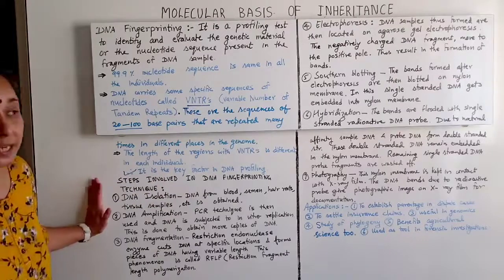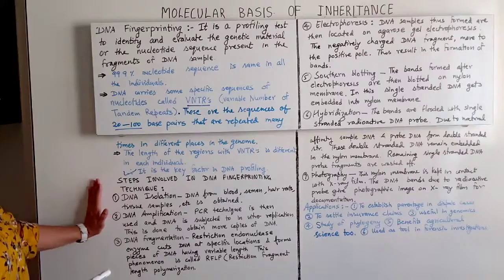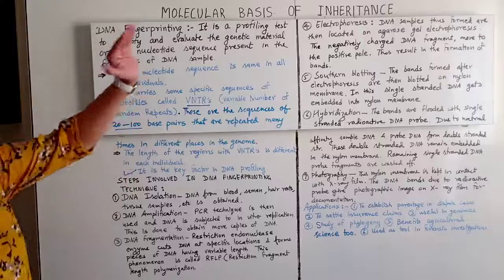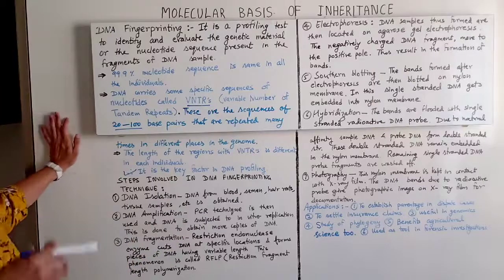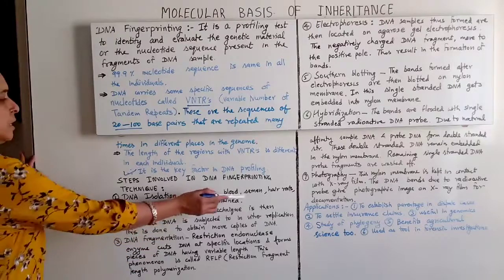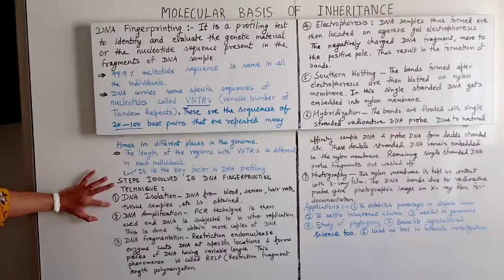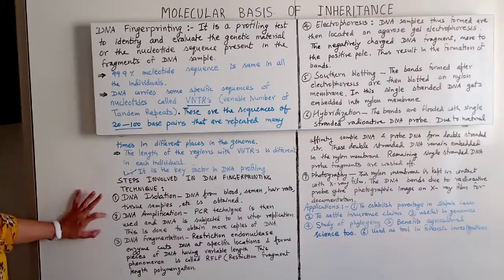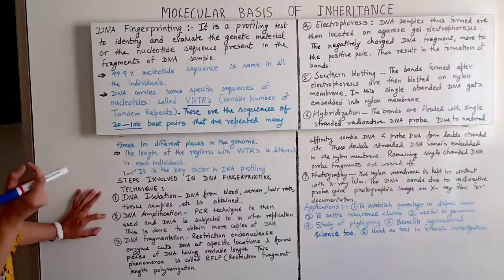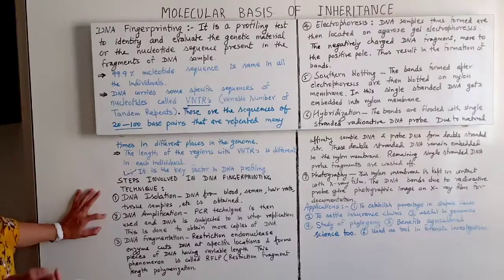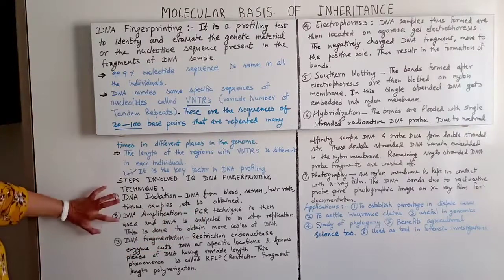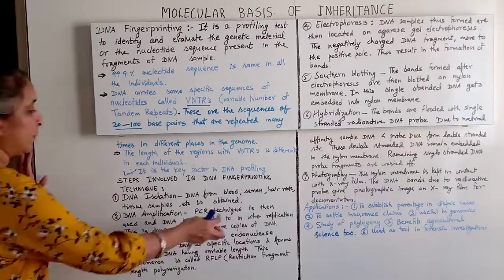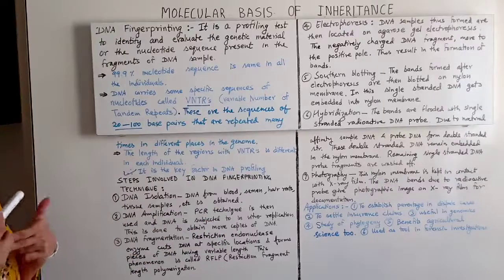There are seven steps in DNA fingerprinting: DNA isolation, amplification, fragmentation, electrophoresis, Southern blotting, hybridization, and photographing. First, DNA is isolated from blood, semen, hair roots, tissue samples, etc. Second, if the DNA fragment is very small, DNA amplification is done using PCR technique — DNA is subjected to in vitro replication to obtain multiple copies.